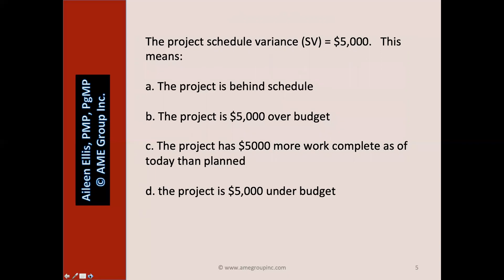The schedule variance is a positive number — that's a good thing. Answer A, 'the project is behind schedule,' is wrong; if the project were behind schedule, the schedule variance would be a negative number. Answer B, 'the project is $5,000 over budget,' is about cost, not schedule, so B is wrong. Answer C, 'the project has $5,000 more work complete as of today than planned,' is the best answer. Answer D, 'the project is $5,000 under budget,' is wrong — the question only tells us about schedule variance, not cost variance.